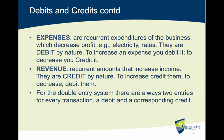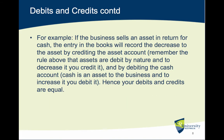In the double entry bookkeeping system, there are always two entries for every transaction — a debit and a corresponding credit. For example, if a business sells an asset in return for cash, the entry in the books will record the decrease to the asset by crediting the asset account. Assets are debited by nature, and to decrease them, you credit them. And by debiting the cash account — cash is an asset, and to increase it you debit it — your debits and credits are always equal.